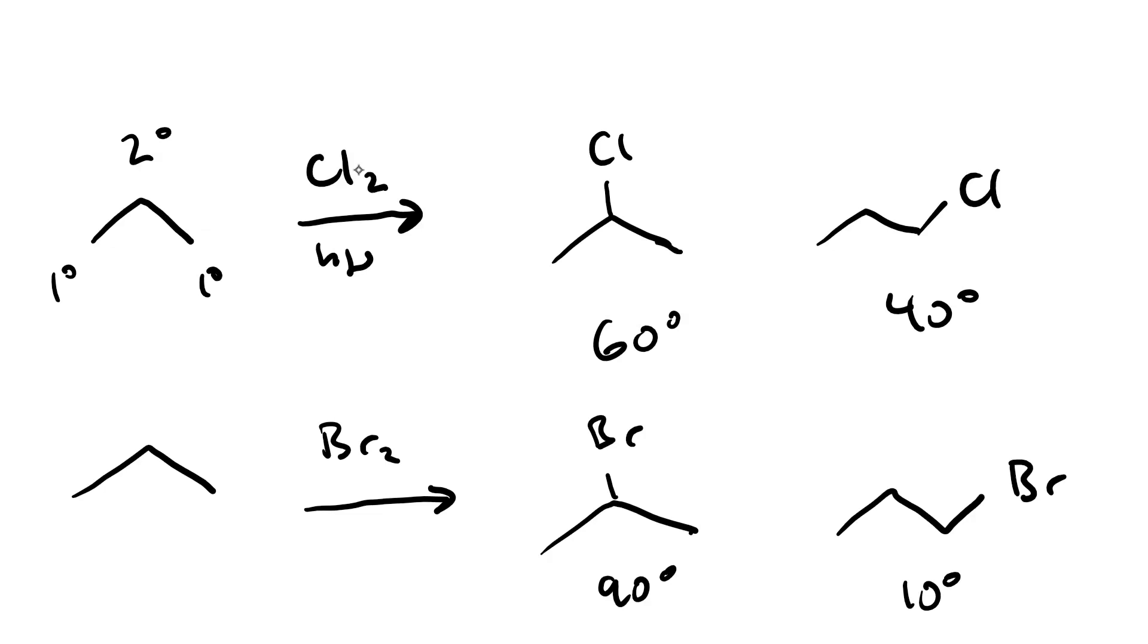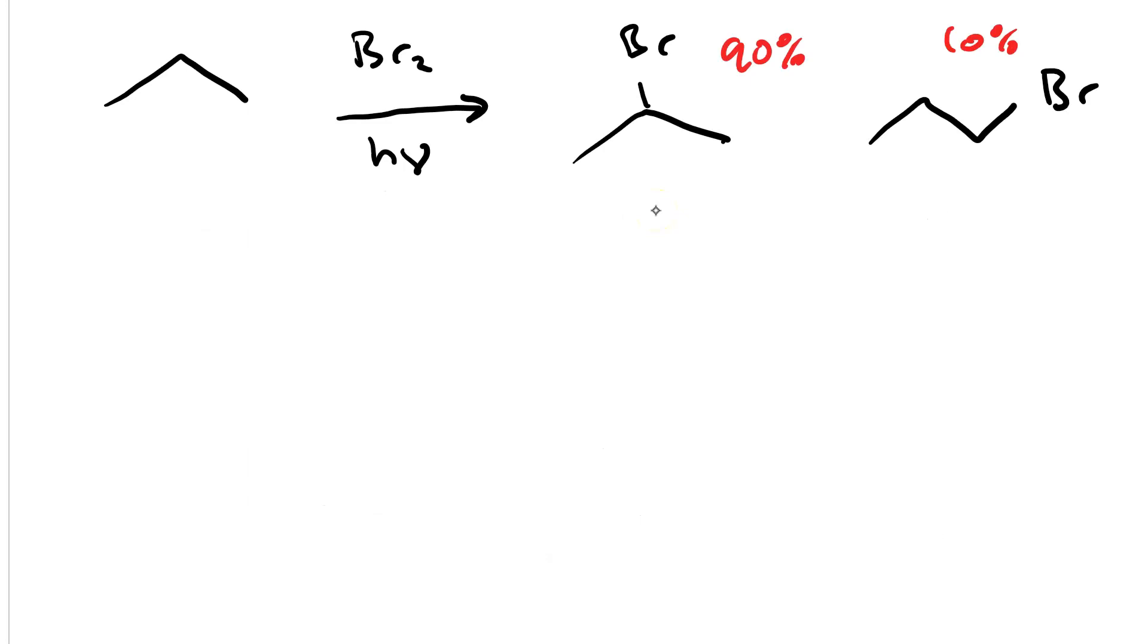The best answer would be to use radical bromination and then do elimination followed by substitution. So, we would take our major product, the 2-bromopropane, and we'd do elimination by reacting it with a strong base, say, sodium methoxide. This would give us propene.